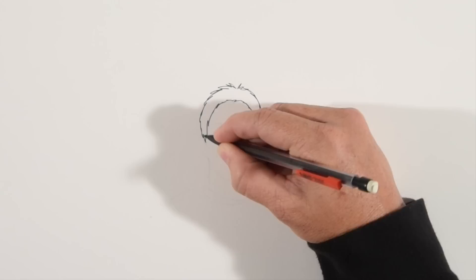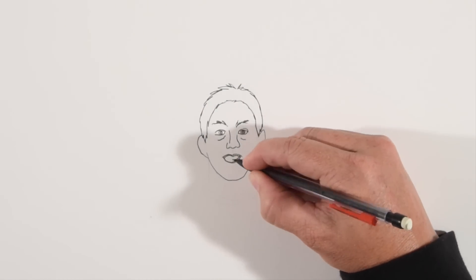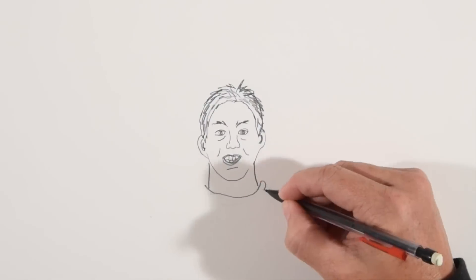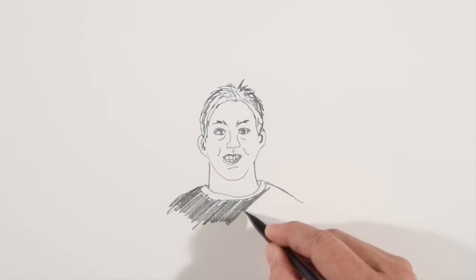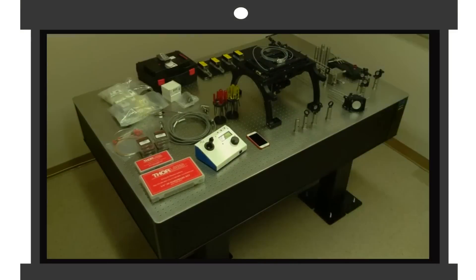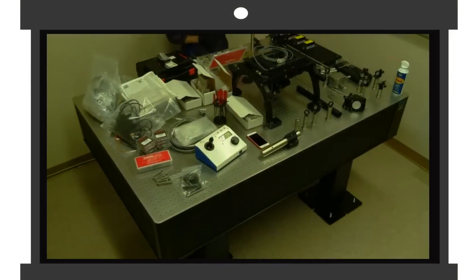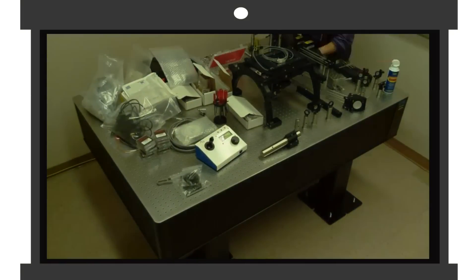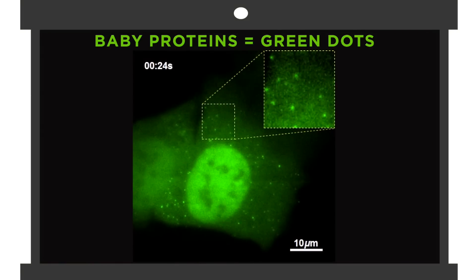For the first time ever, CSU researchers led by Tim Stasevich can show us baby proteins being born in real time. They built this crazy cool microscope, and they used a special fluorescent key that fits onto a baby protein as soon as it's born. Lots of these glowing keys make the baby protein light up, and that fancy microscope lets us watch it all happen.